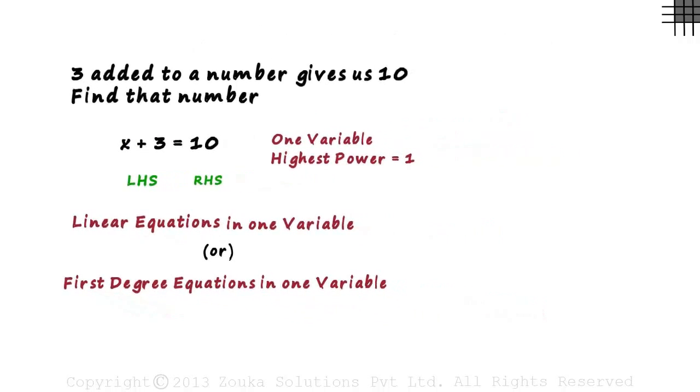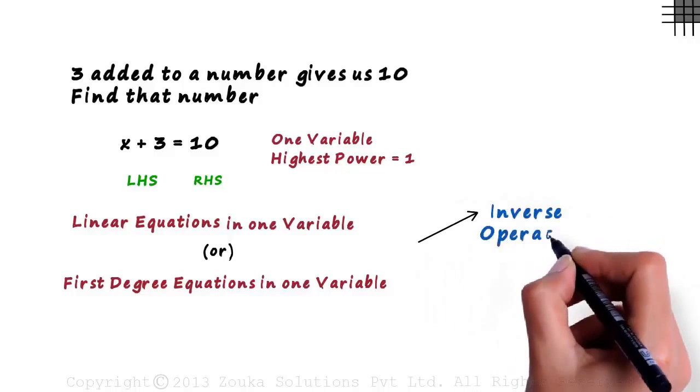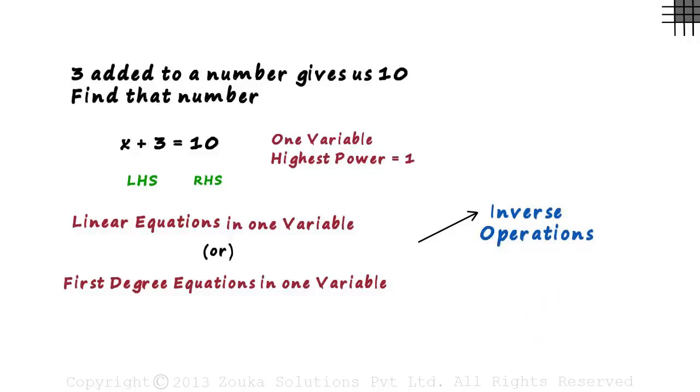There are two ways in which we can solve the equation. The first method is called the inverse operations method, and the second one is the transpose method.